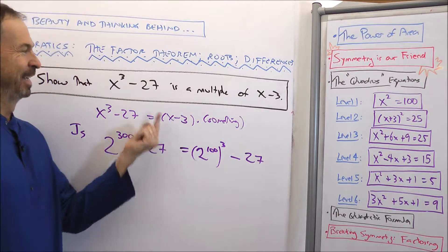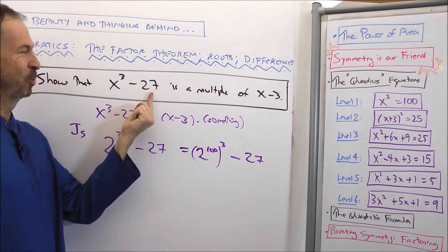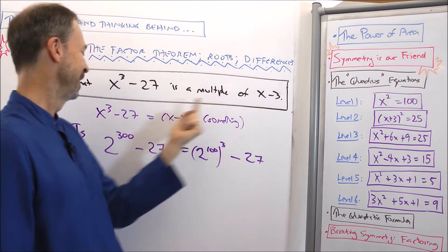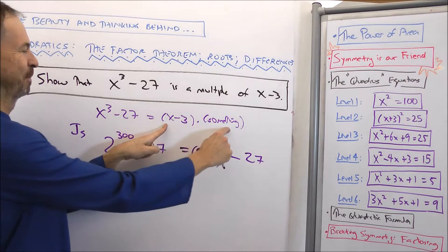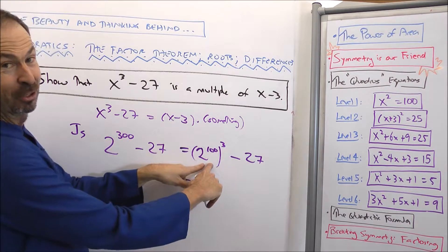And look at that. We just showed that x³ minus 27 is a multiple of x minus 3. There it is, it's (x minus 3) times something, and now my x is 2 to the 100th power,